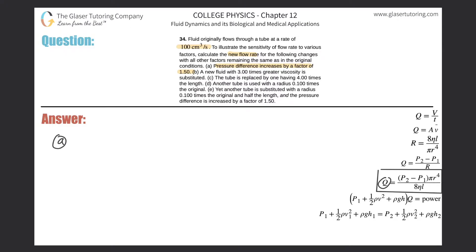The relationship between flow rate and all of the variables in the numerator is a direct relationship. Whatever factor the change in pressure — that's P2 minus P1 — increases by, if it changes by one and a half times, then Q changes by the same amount, one and a half times.